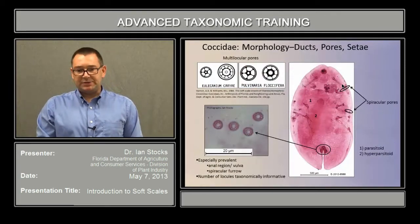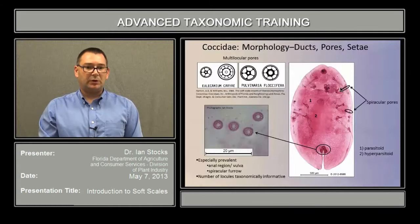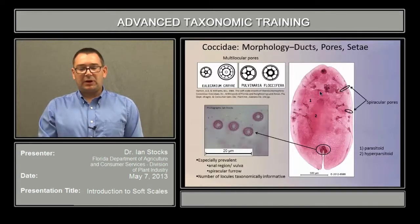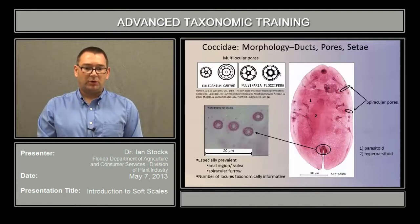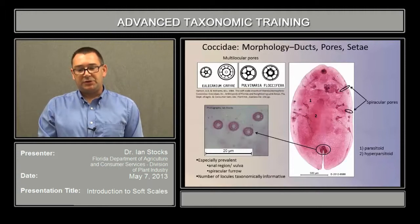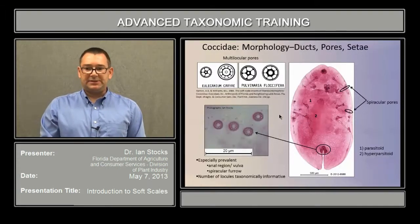There are a number of different pore types that occur throughout the body of a soft scale, but some of the most important are the multilocular pore variety. These can be especially prevalent around the anal region and the vulva, and also in the spiracular furrow. One of the most important characters of the multilocular pores is the number of locules — the voids around the perimeter as seen in the light micrograph — and that number can be taxonomically significant.